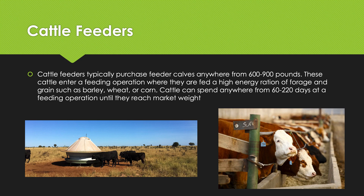Cattle feeders typically purchase feeder calves anywhere from 600 to 900 pounds. These cattle enter a feeding operation where they are fed a high-energy ration of forage and grain such as barley, wheat, or corn. The cattle can spend anywhere from 60 to 220 days at a feeding operation until they reach market weight. If you're a cattle feeder, you're getting the calves in and feeding them up as quickly as possible on high-quality food to get them to market spec.